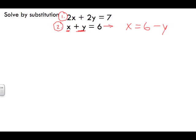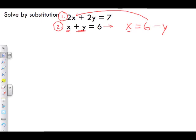Now we've isolated for our unknown and we're going to substitute x = 6 - y into equation number one. Let's rewrite equation number one, which is 2x + 2y = 7. Remember, when substituting, we're always substituting either equation one into two or two into one.